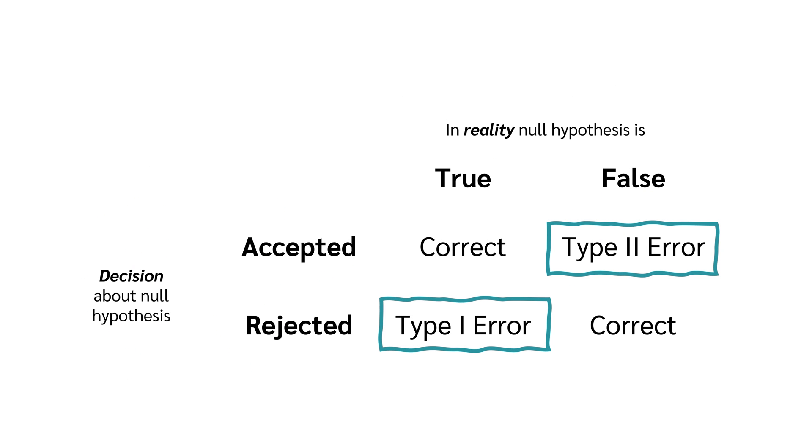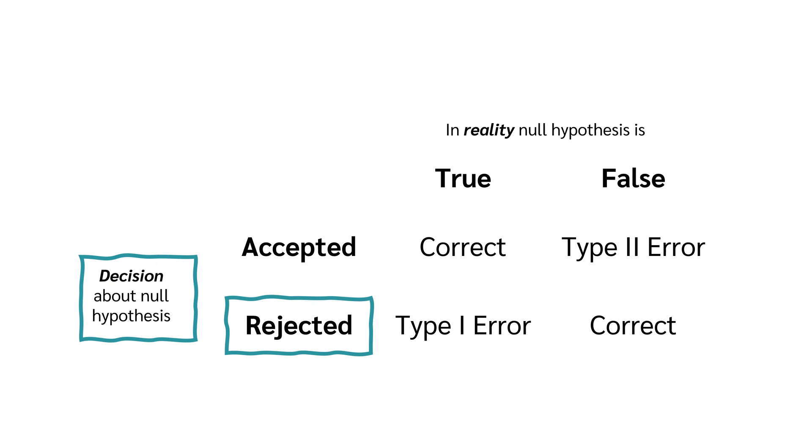So, there are two types of errors which are called type 1 and type 2 error. Let's start with the type 1 error. In hypothesis testing, a type 1 error occurs when a true null hypothesis is rejected. So, in reality, the null hypothesis is true, but we make the decision to reject the null hypothesis.